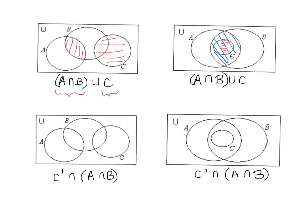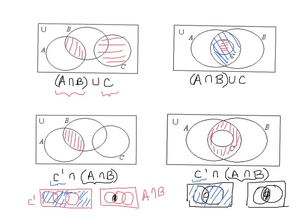It's an intersection — pause the video and try it on your own. The answers for the last two: I did scratch work to visualize what the sets had in common, seeing what C complement shared with A intersect B, and those were the shaded areas.